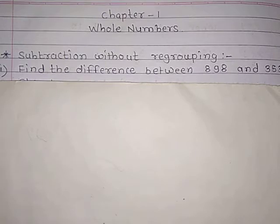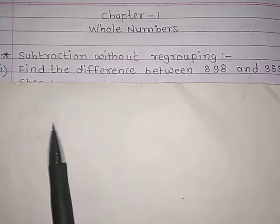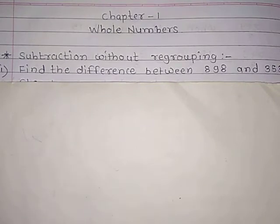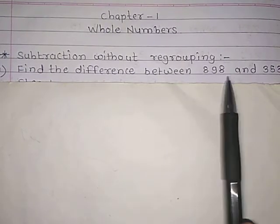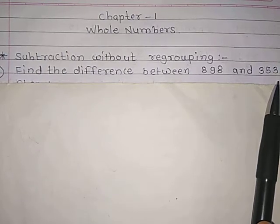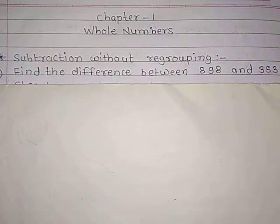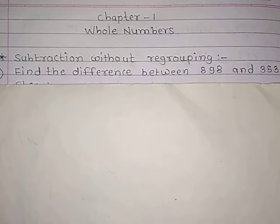See here we have an example. Find the difference between 898 and 353. So we have to follow the same rules which we had learned in addition without regrouping.